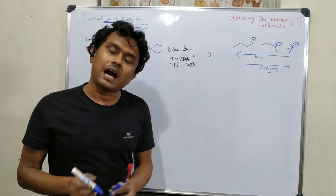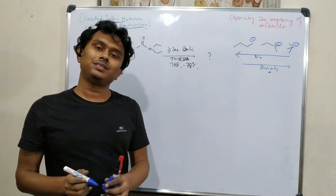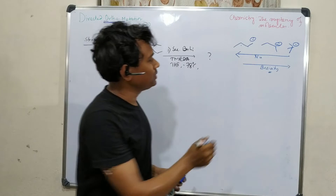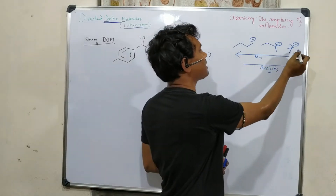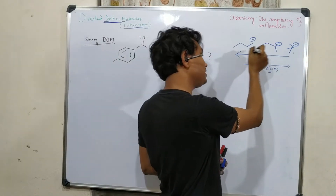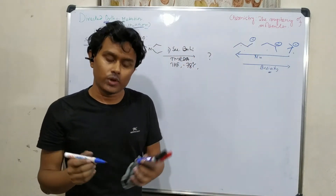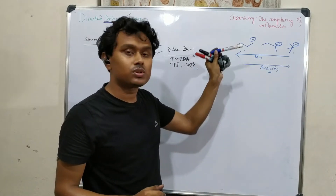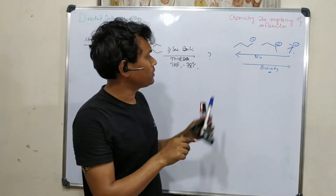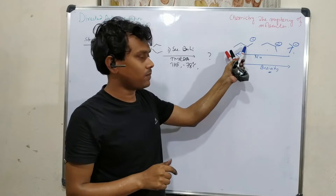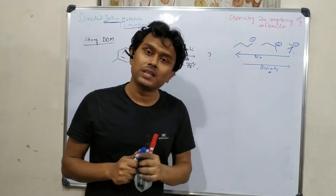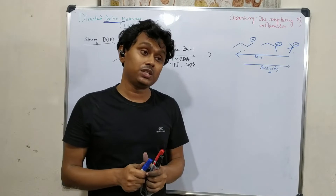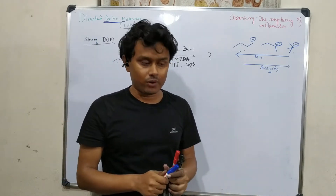Directed ortho-lithiation is mainly basicity-driven. This secondary butyllithium is more reactive, and tertiary is after that. Whenever possible we prefer to use n-butyllithium, as we have seen in many examples. But when there is a problem of selectivity or multiple reactions, we need to be more careful.